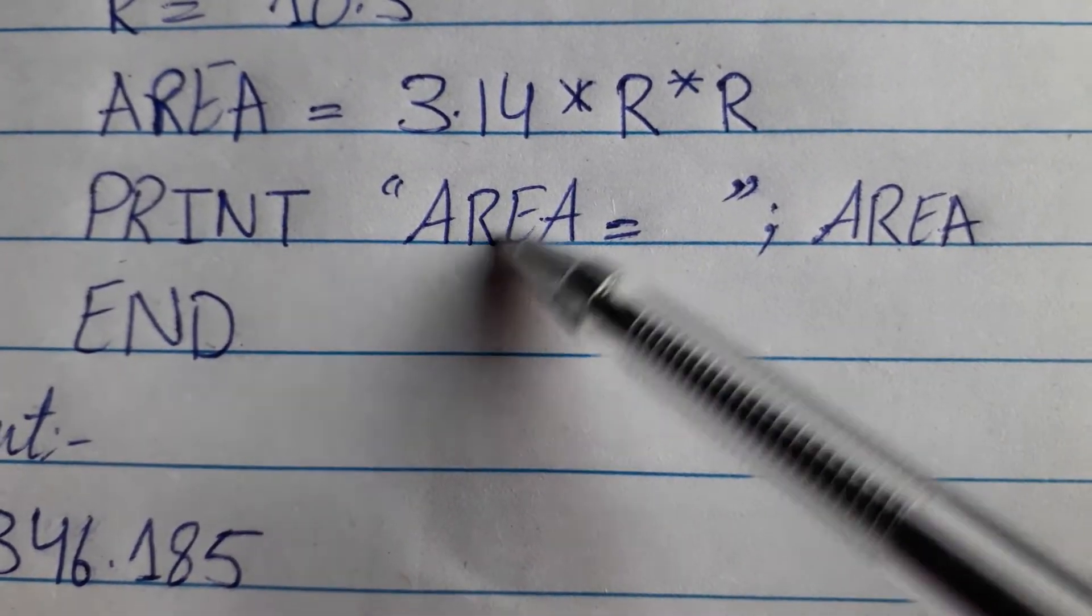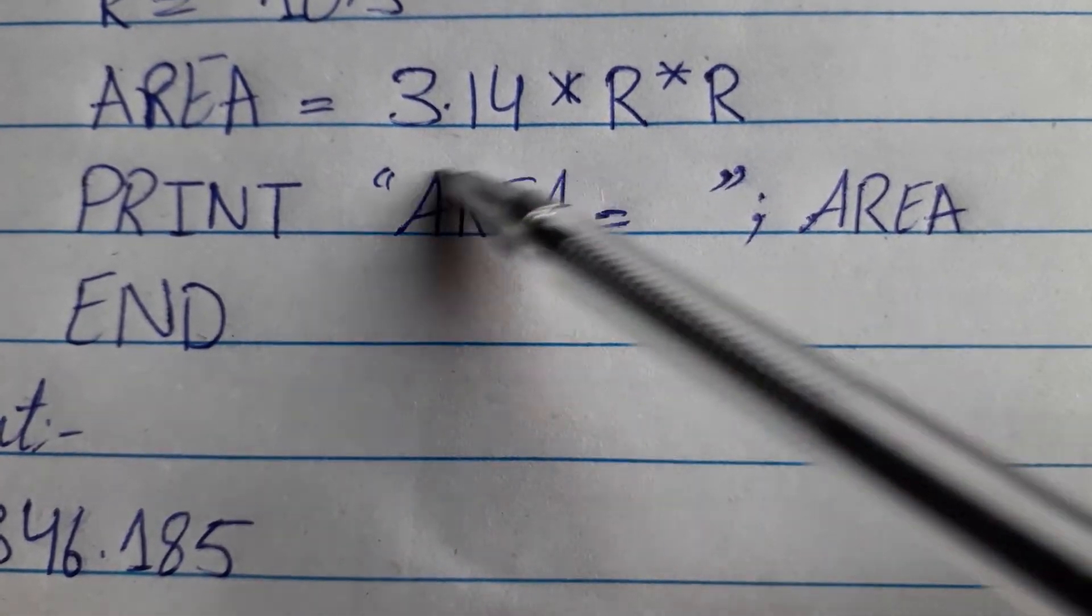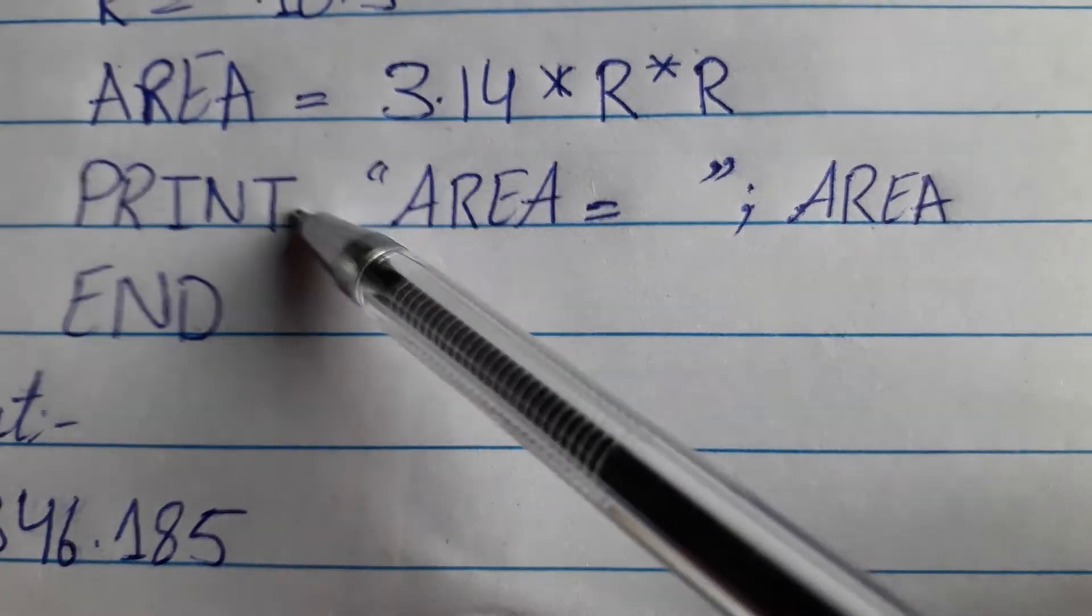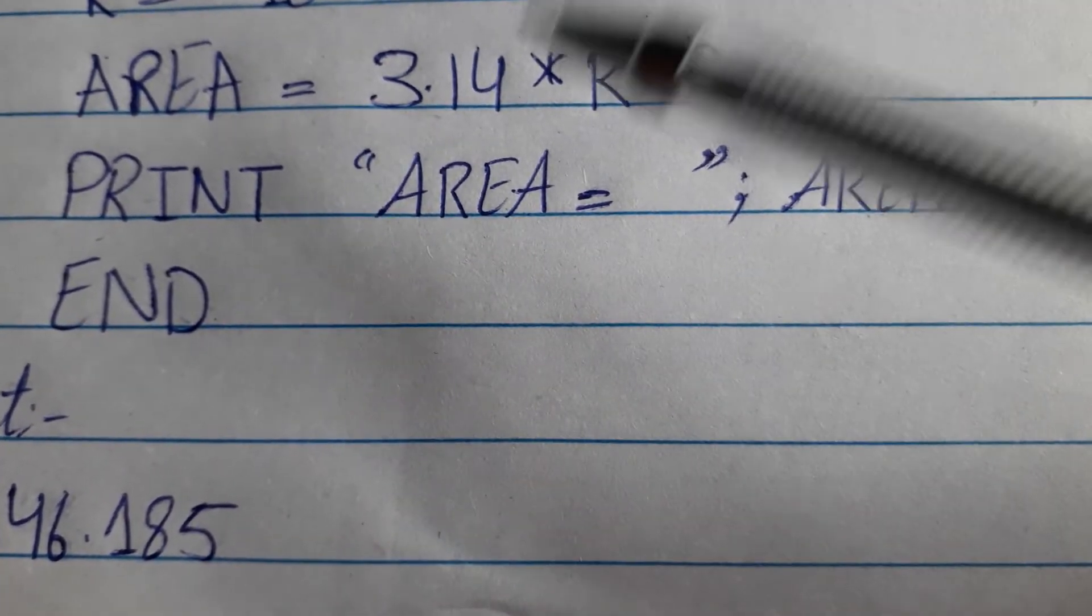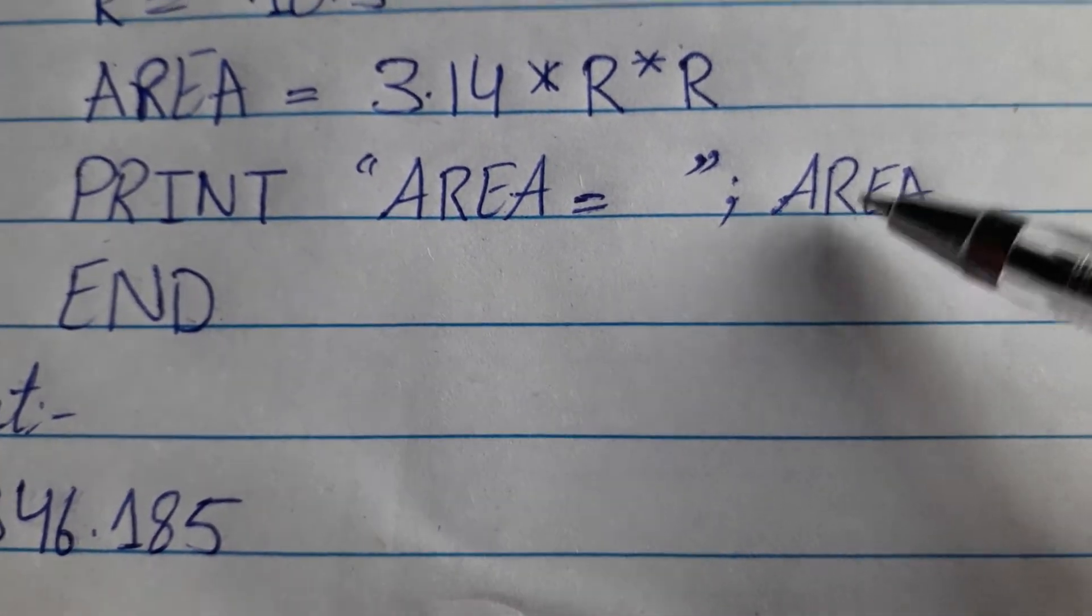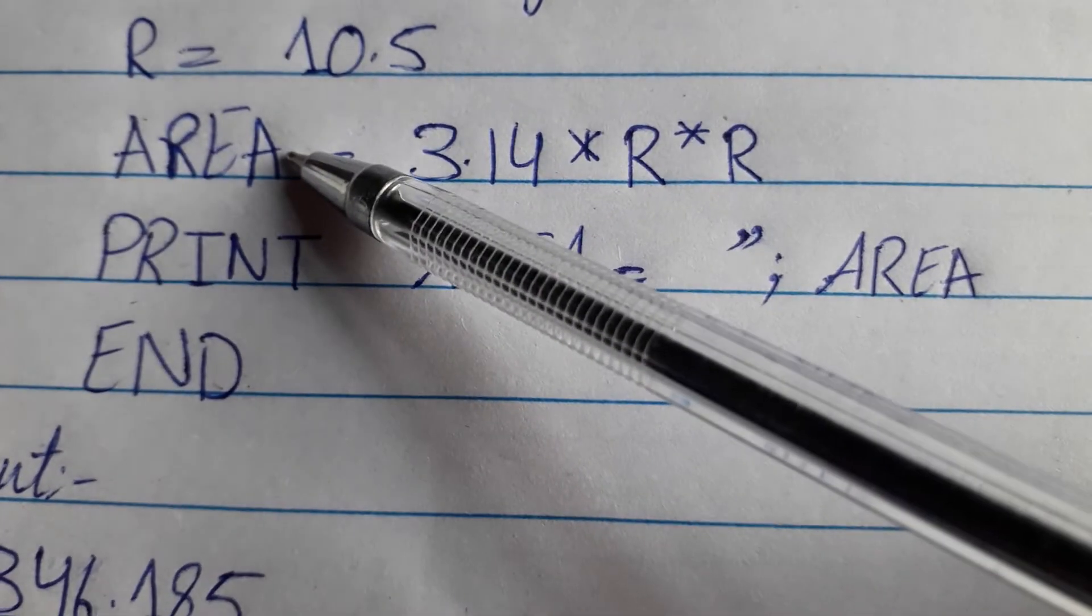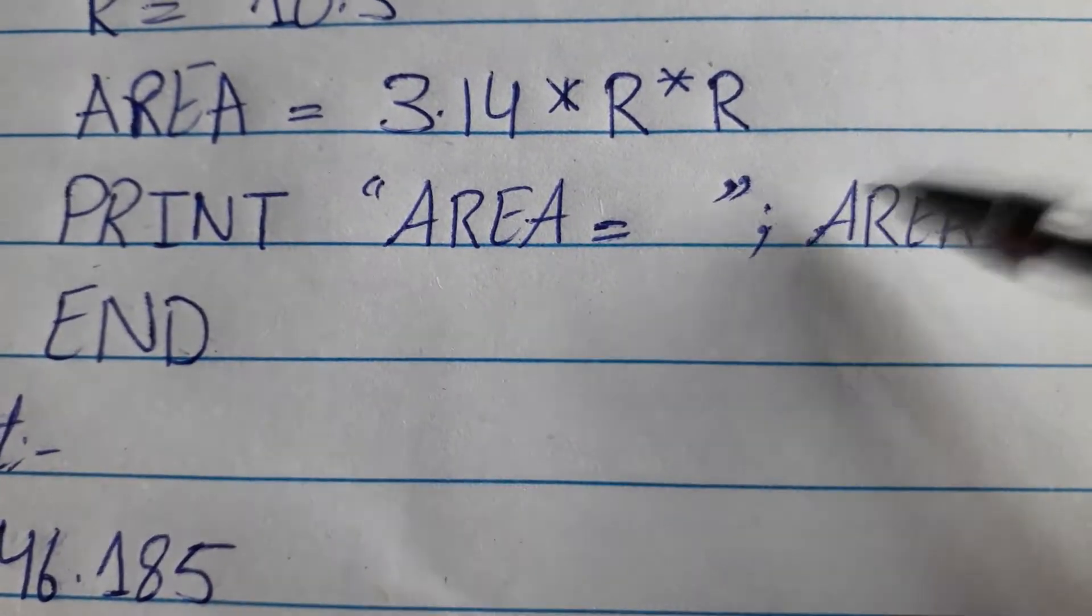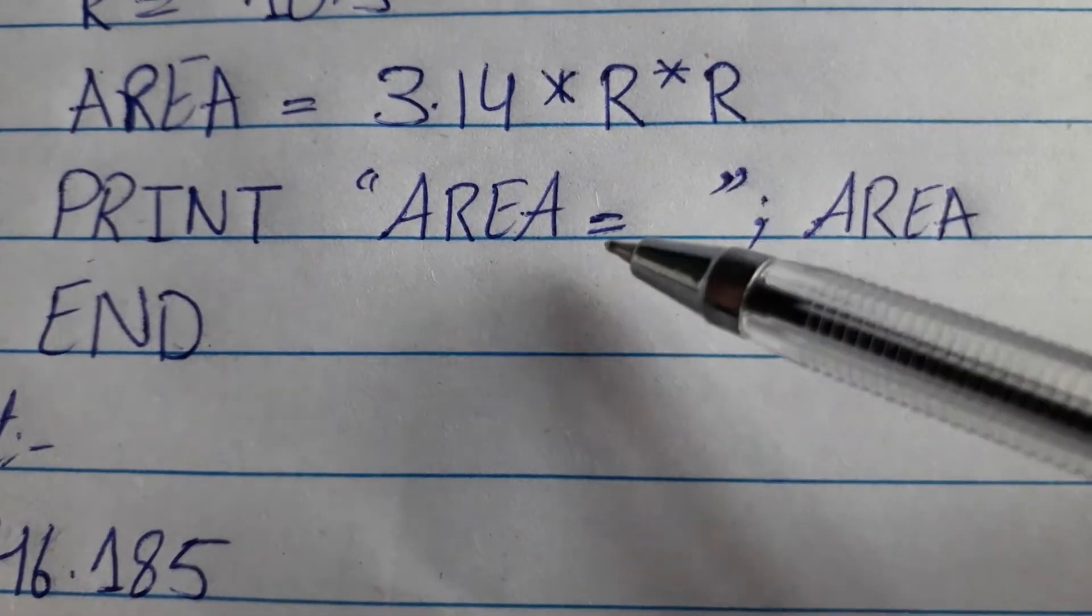We have to print it in inverted commas. Students, which we write in inverted commas, as it is, which we print on our output screen. Here we have the area, which is written here, which is the value store. I have written here. When the statement is executed, the area of the value will show here.